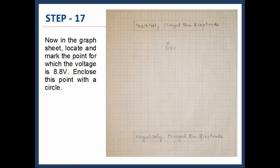Now in the graph sheet, locate and mark the point for which the voltage is 8.8 volts. Enclose this point with a circle.